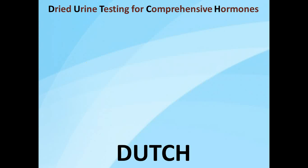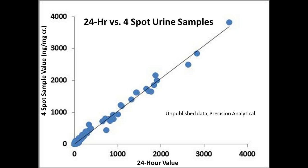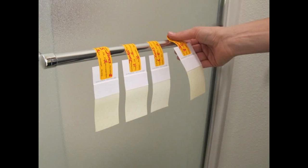It's a nice model for testing. Rather than a 24-hour collection, it uses multiple spot urine samples. When done correctly, for hormones like testosterone, estrogen, and cortisol metabolites, these samples correlate well to a 24-hour collection.